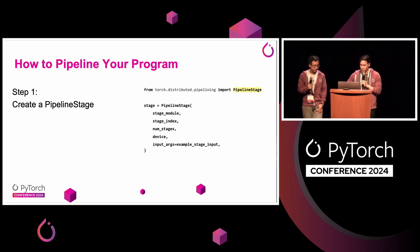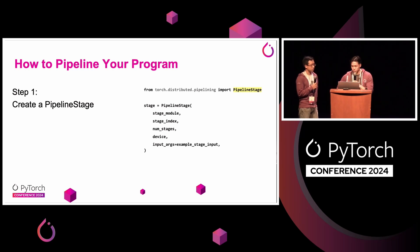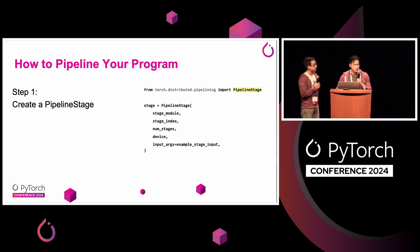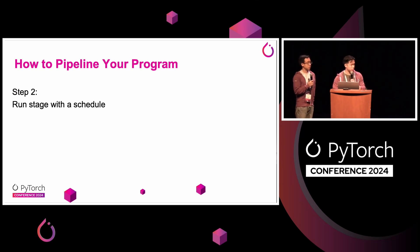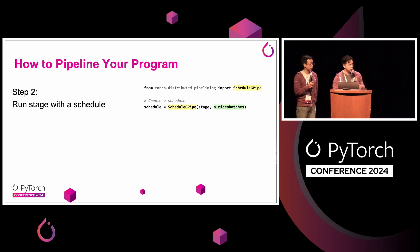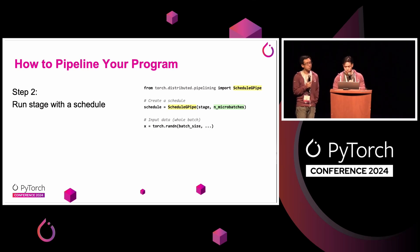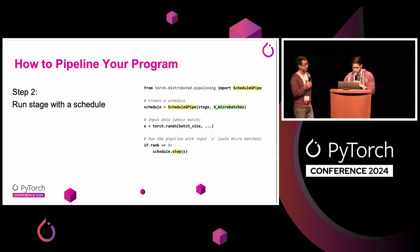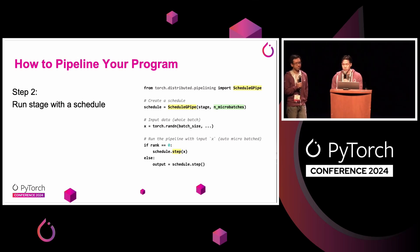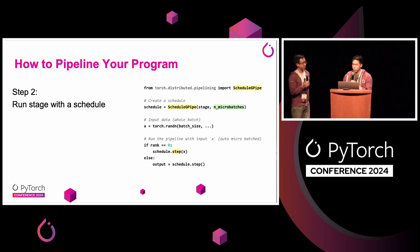Let's dive into the APIs — this is under torch.distributed.pipelining. First, we have the concept of a pipeline stage, which is kind of like a model segment or model chunk. You pass in the stage model along with other metadata like the stage index, which is basically the stage ID, num stages, devices, and also an example input or example activation. Once you have your stage, you can run a schedule. You can import a schedule — here we're importing G-pipe — and create a schedule by passing in the stage and the number of micro-batches you expect it to process. We create an example input as a random tensor of the batch size. To actually run the schedule, we call the .step function, which processes the entire mini-batch of data. It will automatically split the input into the N micro-batches. Rank 0 passes in the data, while all other ranks have the data communicated through them.